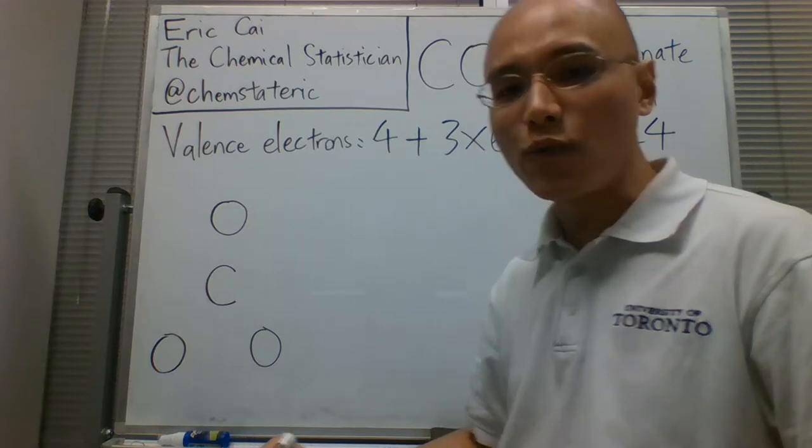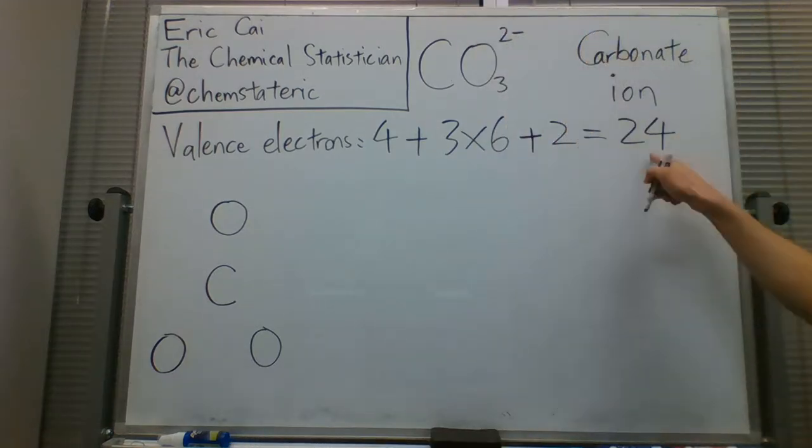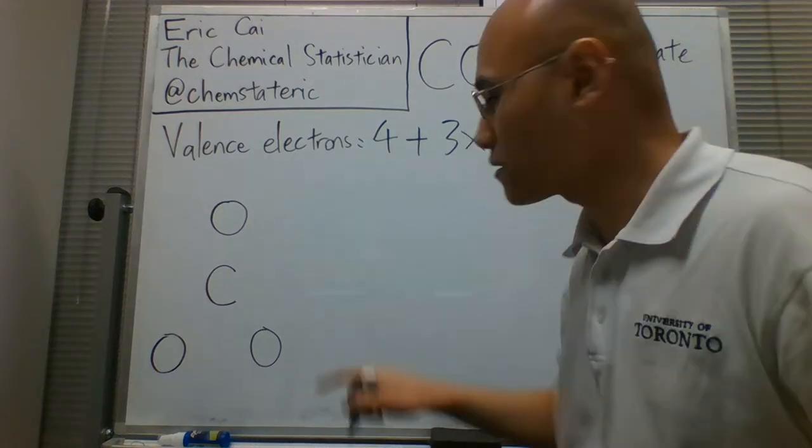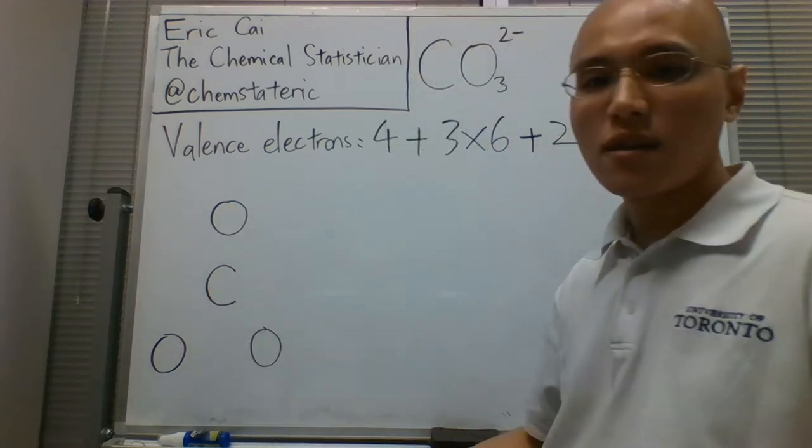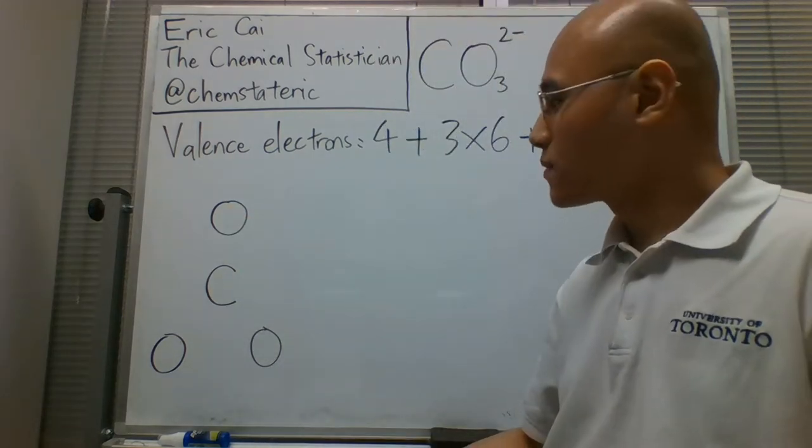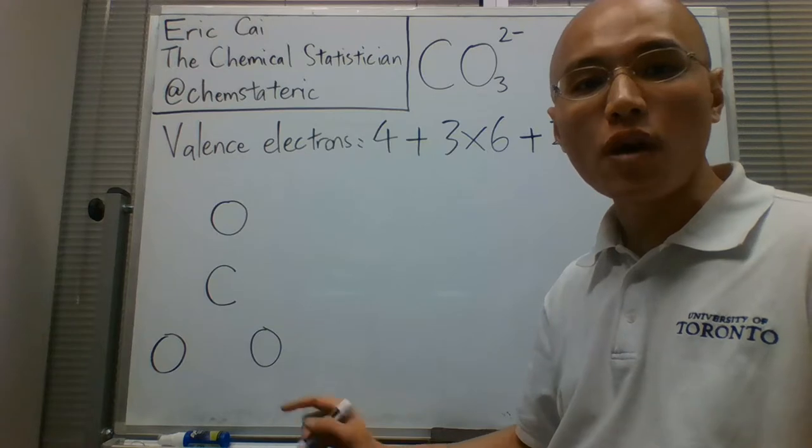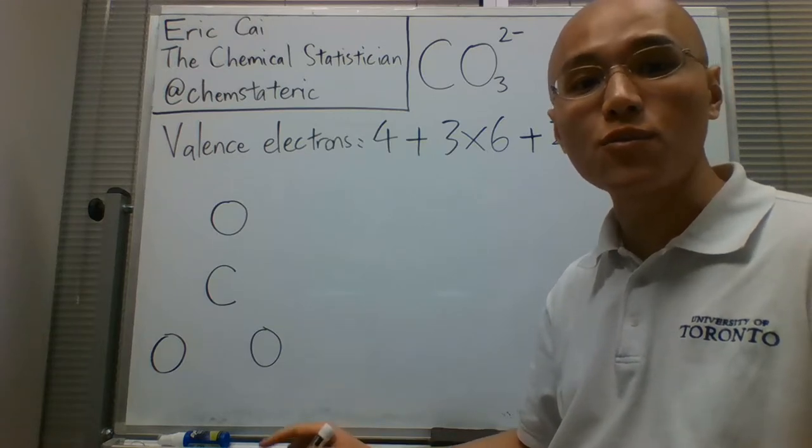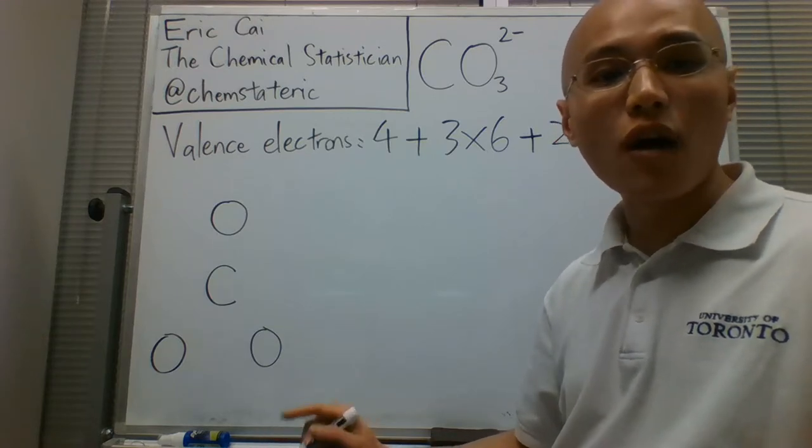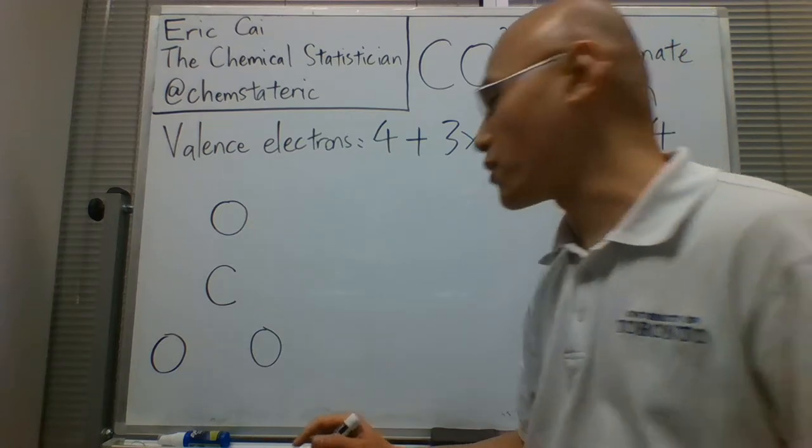Now, we need to distribute these 24 valence electrons into this polyatomic ion. We first draw the bonds, and I encourage you to assume that the bonds are all single bonds. That's not always true, but it's a good starting point.